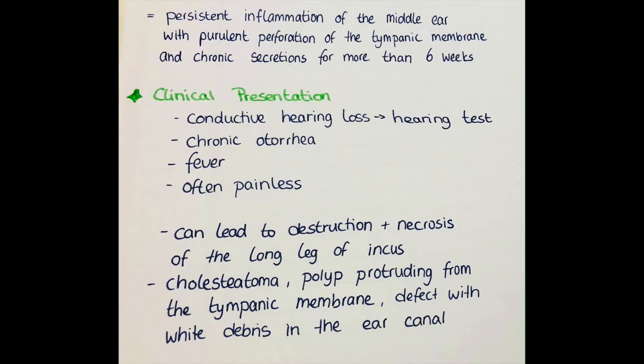So what is the clinical presentation of chronic suppurative otitis media? It is accompanied by conductive hearing loss, which is usually seen in the hearing test, and also chronic otorrhea — secretion of the ear. It's often malodorous and purulent, so it's often yellow-greenish in color and usually smells bad.